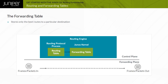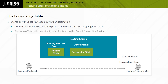The forwarding table stores a subset of information from the routing table. Within the forwarding table, you can find the details used by a device running Junos OS to forward packets, such as the learned destination prefixes and the outgoing interfaces associated with each destination prefix. The Junos OS kernel maintains a master copy of the forwarding table and copies it to the packet forwarding engine, which is the part of the router responsible for forwarding packets.